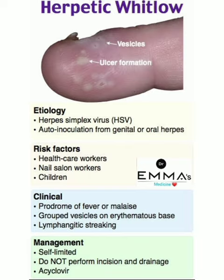Clinical presentations: a herpetic whitlow patient may present with a prodrome of fever or malaise, grouped vesicles on an erythematous base, and lymphangitic streaking.